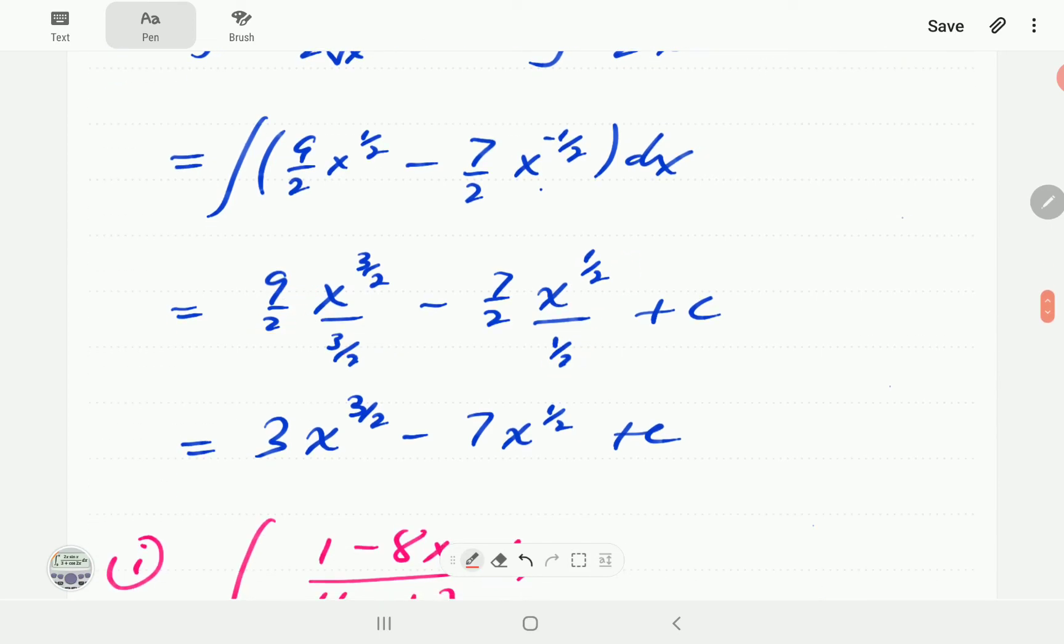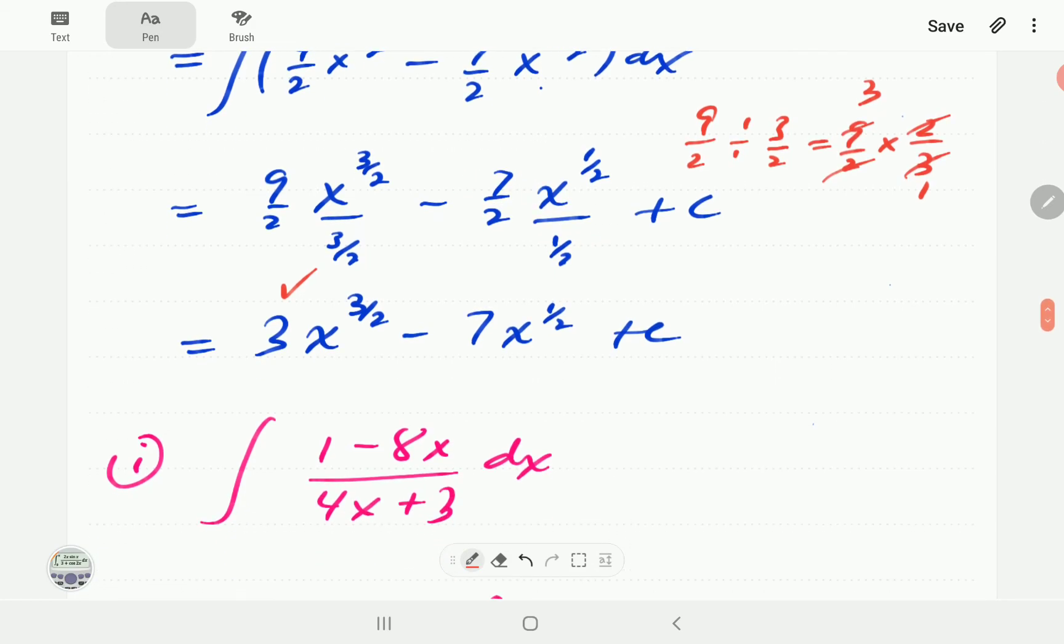Then nine halves over three halves, so nine halves divided by three halves is the same as nine halves times two thirds and so the two cancels out, the three goes three times here so we've got three. Then similarly seven divided by one half is just seven. So that's going to be our final expression: 3x^(3/2) - 7x^(1/2) + C.